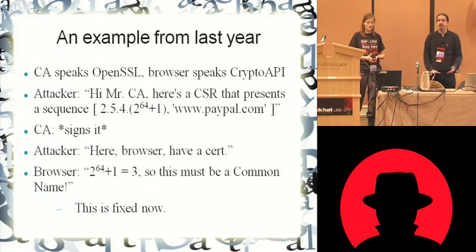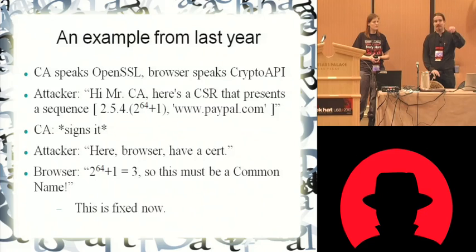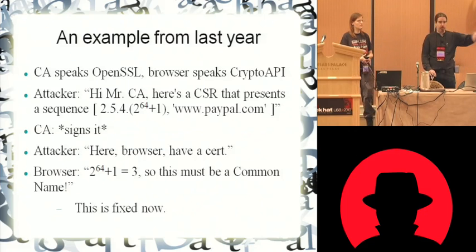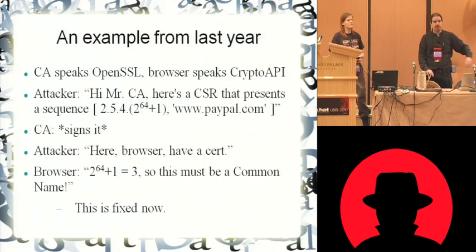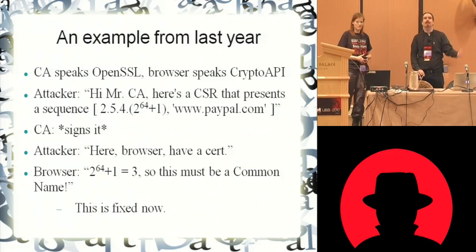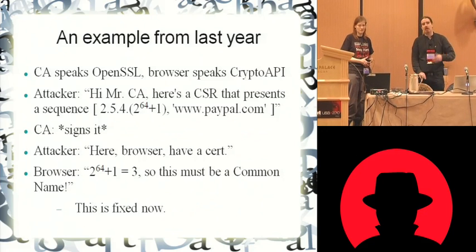A similar attack we found had to do with null termination. You could have www.paypal.com, null-character.yourdomain.com — OpenSSL once again just takes that blob, checks it. It's a third, fourth, fifth level domain off of the domain that you own, so it'll sign it.